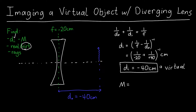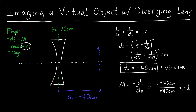We can also figure out the magnification using m = −di/do. Being careful with the negative signs: we have minus times (−40 cm) divided by (−40 cm). The two minus signs cancel, giving a magnification of negative one. So we expect the image to be in the lower left, pointing downward since magnification is negative, and about the same size as the object since the magnitude is one. And it's virtual.